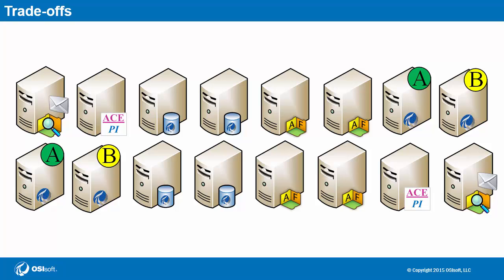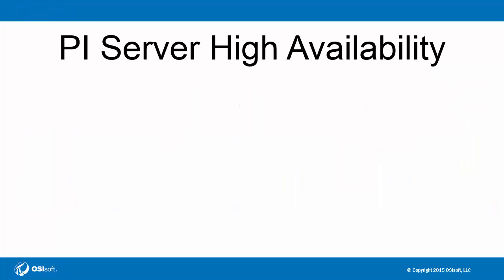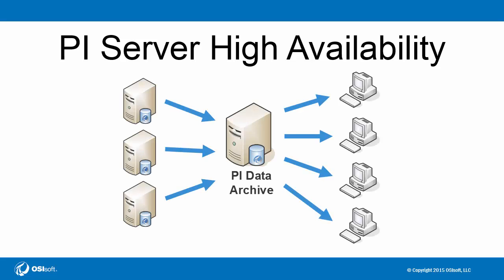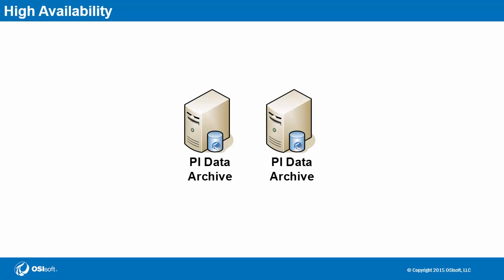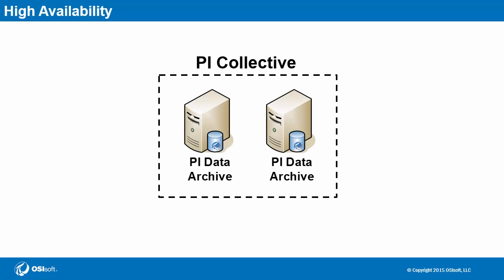The first of many architecture options is PI Server High Availability. As the central storage location of time series data, the PI Data Archive is an essential piece in the infrastructure. The functionality of the PI System takes a huge hit when the PI Data Archive is unavailable. To best ensure maximum data uptime, you can take advantage of built-in high availability, or HA features. Two or more PI Data Archives are grouped into what's called a PI Collective, and each contains separate but identical copies of information, helping to provide uninterrupted access to data.